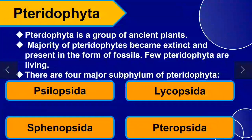Tracheophyta is a group of ancient plants. Most Tracheophytes are extinct and present in the form of fossils; few are present as living organisms. There are four major subphyla of Tracheophyta: Psilopsida, Lycopsida, Phenopsida, and Pteropsida.